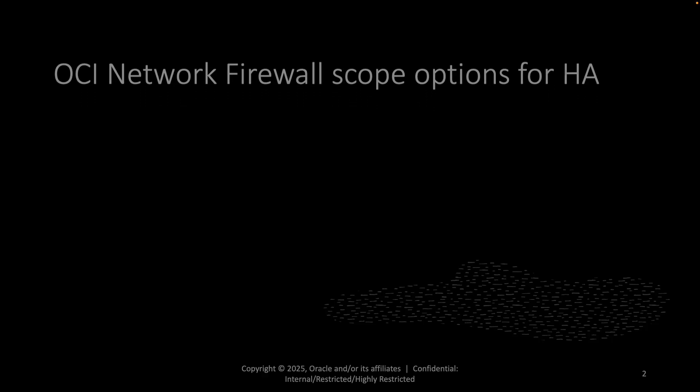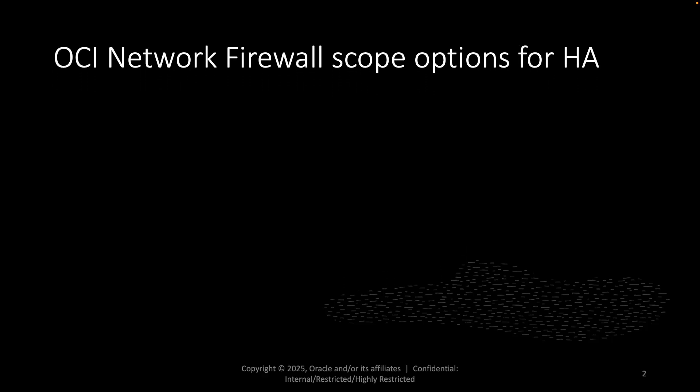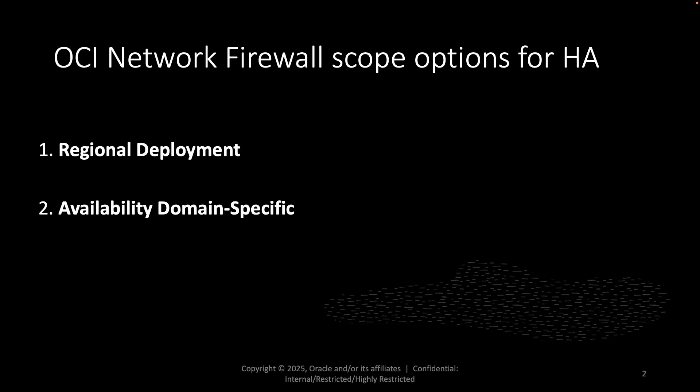When deploying OCI Network Firewall, you have two scope options for high availability. The first one is Regional Deployment, and the second is Availability Domain Specific.